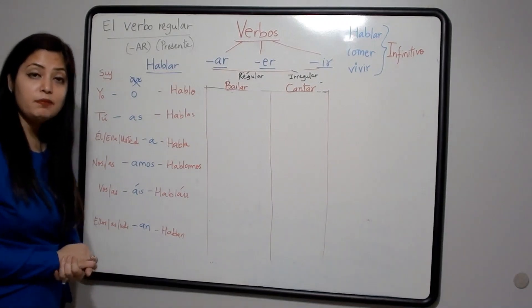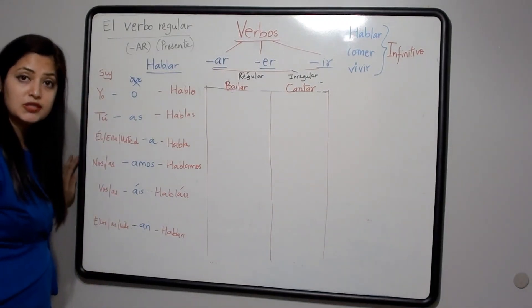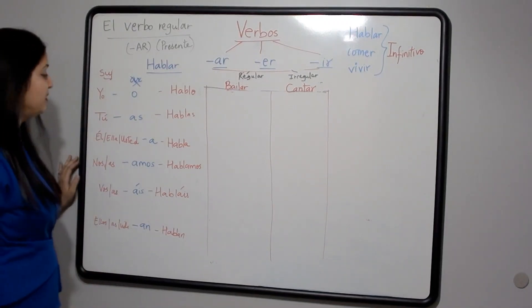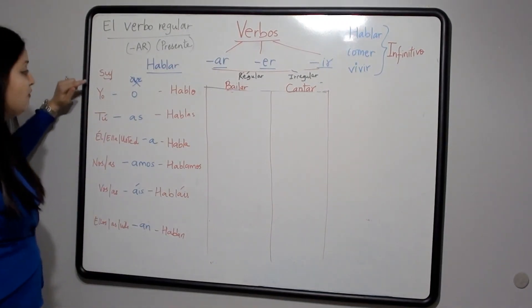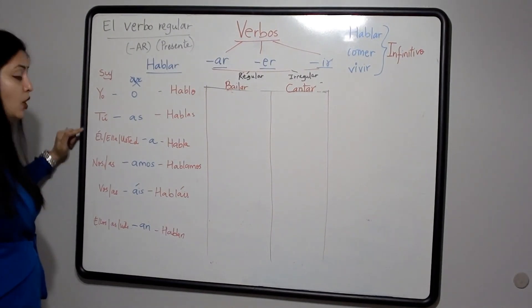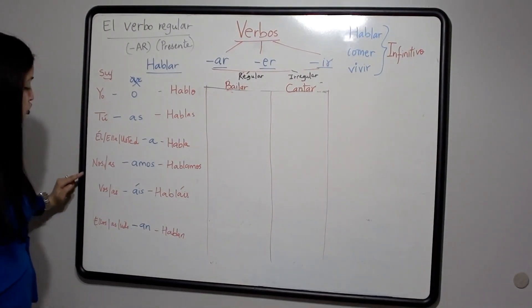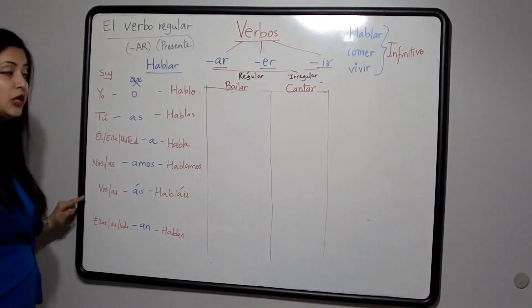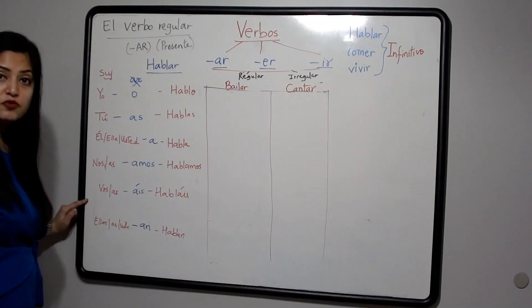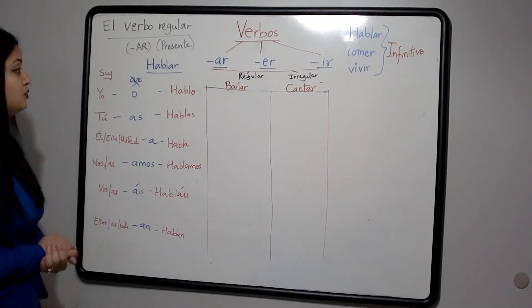Before we conjugate the verb, let us recall the six subjects we learned in the previous video: yo, tú, él/ella, usted, nosotros, nosotras, vosotros, vosotras, ellos, ellas, and ustedes.